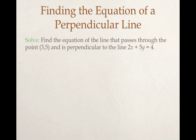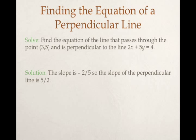Finding the equation of a perpendicular line. So let's go back to the line we just looked at, 2x plus 5y equals 4. And let's write the perpendicular line that goes through the point (3,5). Since our slope of our line, the slope of this line right here we found to be negative 2 fifths.